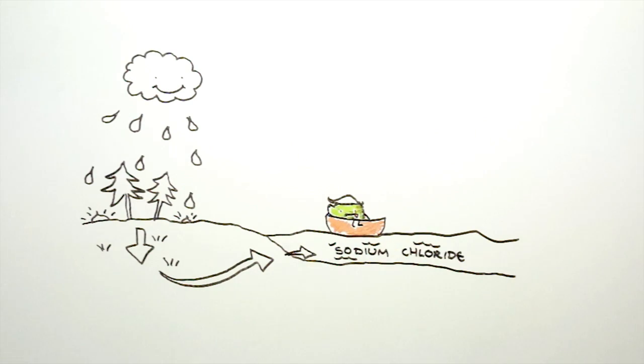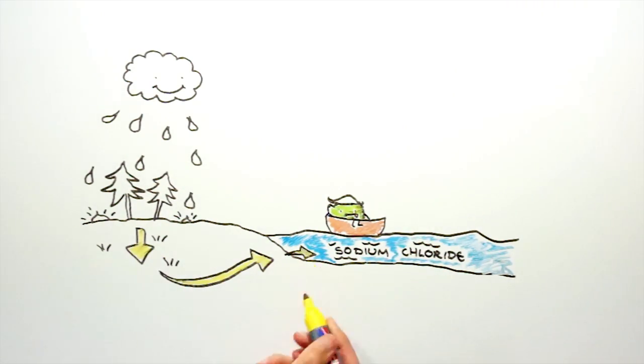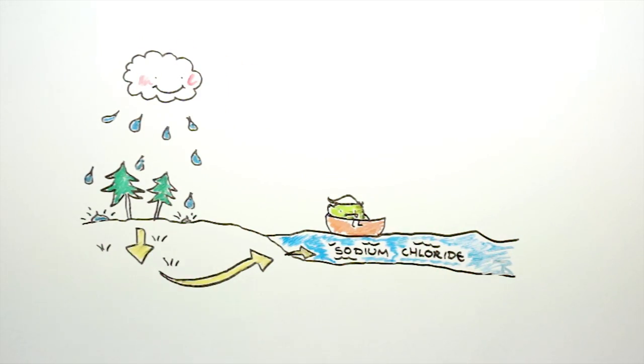Salt, or rather sodium chloride, is very water soluble and is relatively abundant in the ground. So when it rains, any salt that comes into contact with the water will run into the rivers and ultimately into the sea.